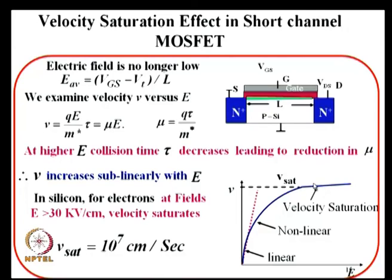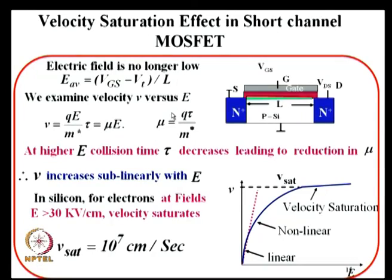The ultimate velocity of electrons is limited by the saturation velocity, which is about 10⁷ cm/s for silicon, gallium arsenide, and many other materials. The electric field at which it saturates is about 30 kV/cm. We will discuss more details in the next presentation, starting from this slide. Thank you.